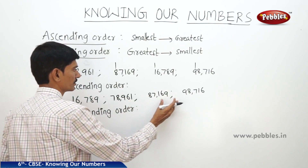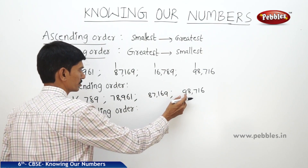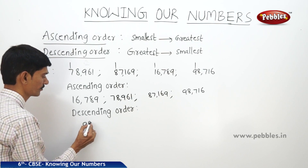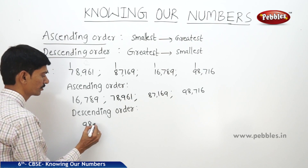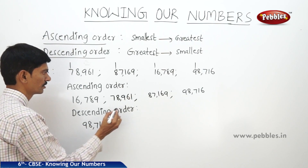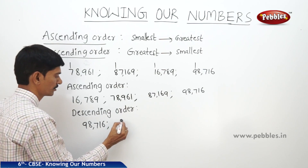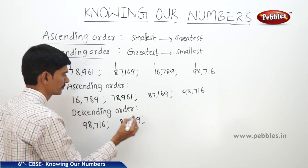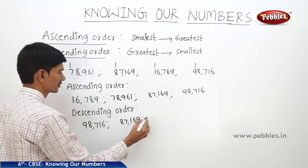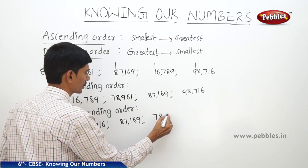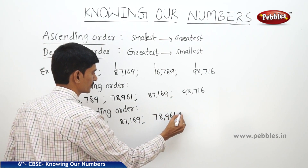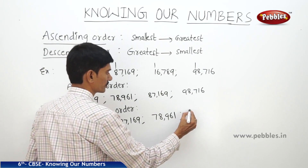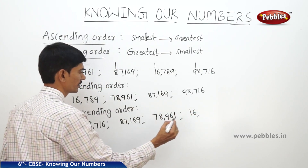For descending order, we write in the reverse order. First we write the greatest number 98,716. Next we write 87,169. Then 78,961. And the last number is 16,789.